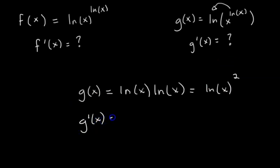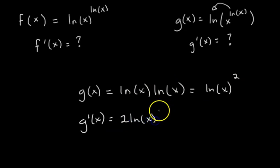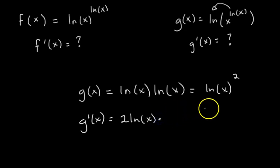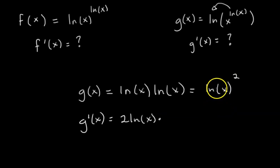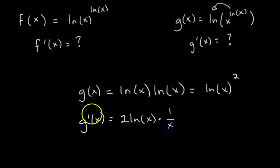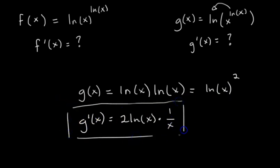So g prime of x would be: we apply the power rule first, giving 2 times ln of x raised to the 2 minus 1 power, so raised to the first power. But we have to multiply by the derivative of the inside, and the derivative of ln of x is 1 over x. So this is the derivative of g of x.